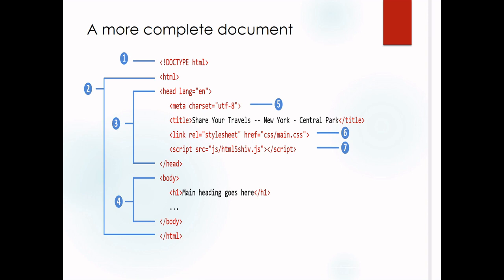Here is the complete picture of an HTML5 document. First, the DOCTYPE html declaration; second, the html element — opening here and closing at the end. Then the head section with lang='en' for English. Inside the head you write the meta tag, title tag, link tags for CSS files, and JavaScript. Everything must be within the opening and closing head tags — keep this in mind before writing any HTML file.